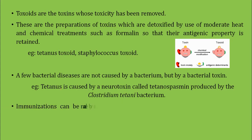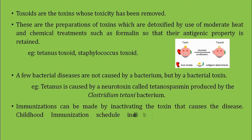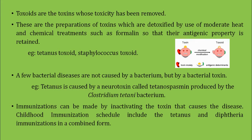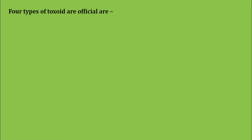Immunization can be made by inactivating the toxin to prepare the toxoid. Childhood immunization schedules include tetanus and diphtheria immunization in a combined form. This immunizing agent is given in childhood against tetanus and diphtheria in the combined vaccine known as the DPT vaccine — Diphtheria, Pertussis, and Tetanus — to protect against three types of disease.